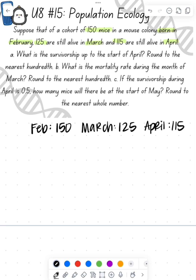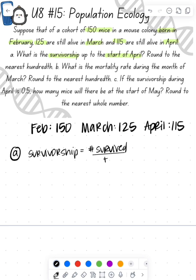Part A asks us to determine the survivorship at the start of April — how many of them that were born in February are still alive in April. We take the number that survived over the total, which is 115 over 150. That gives us 0.766, and rounding to the hundredths place gives us 0.77.